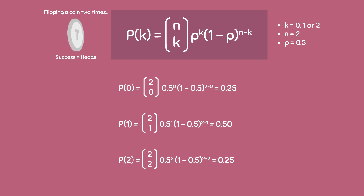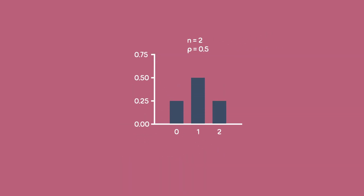To visualize the binomial distribution, we will create a bar chart with this data. The number of successes is listed on the x-axis, which is why we have 0, 1, and 2. These are the probabilities that we just calculated using the binomial formula.